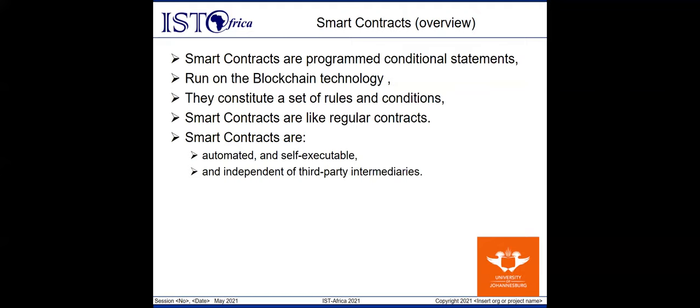Smart contracts are like regular contracts, but built in with additional features. They are things like automation and self-executable programs that are independent of third-party intermediaries. Like any contract, rules, regulations, terms, and agreements are predefined between two or more parties before the contracts are put into an authentic document.